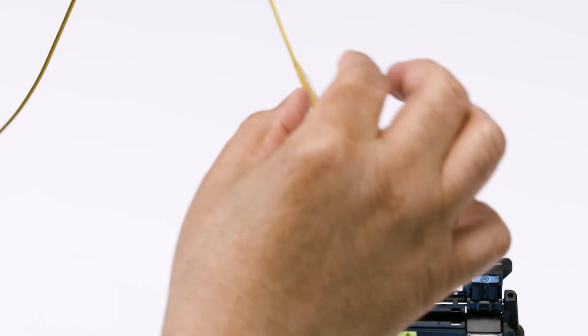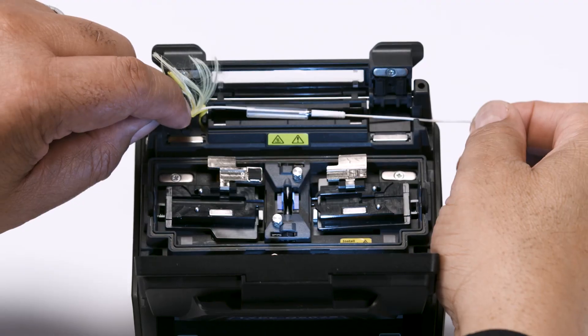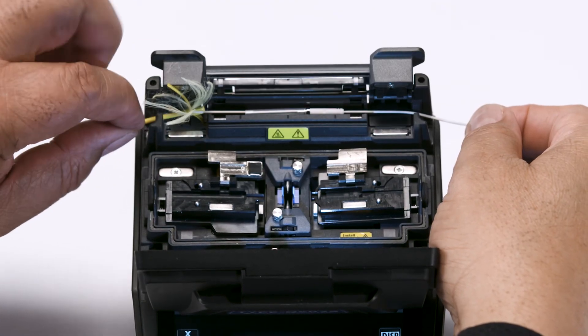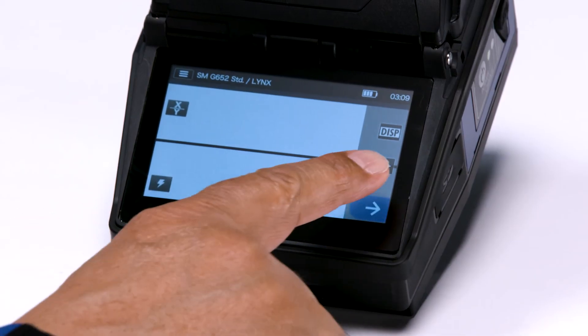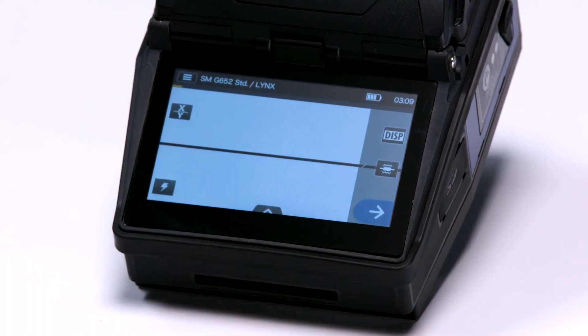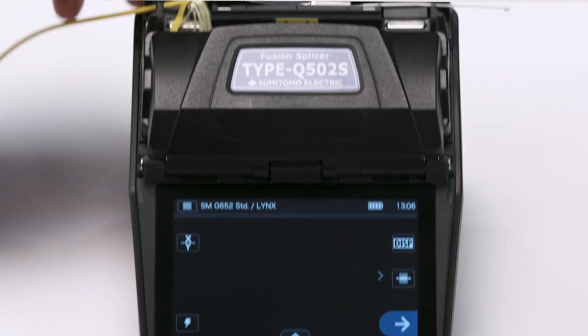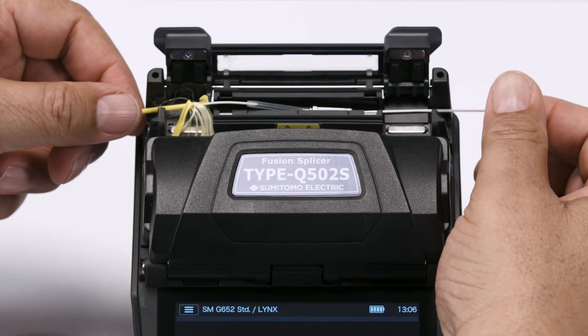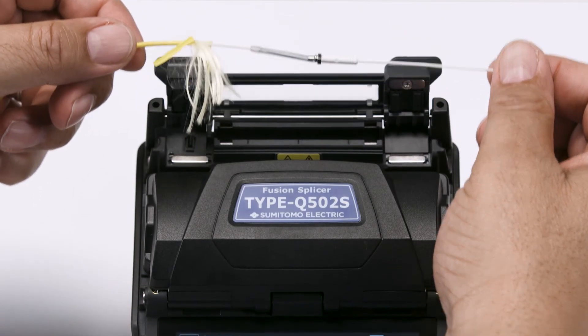Slide the protection sleeve over the fusion splice. Place in the heater oven. Close the heater oven and press the heater button to start the heating process. You'll need to let the sleeve cool down for a little bit before continuing.